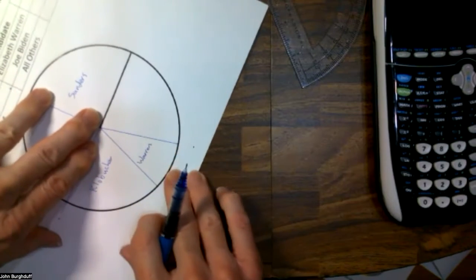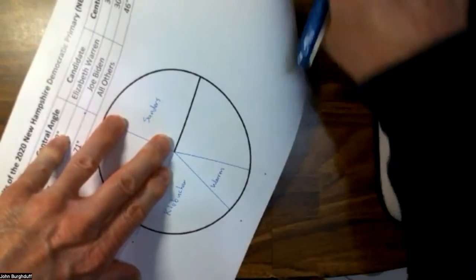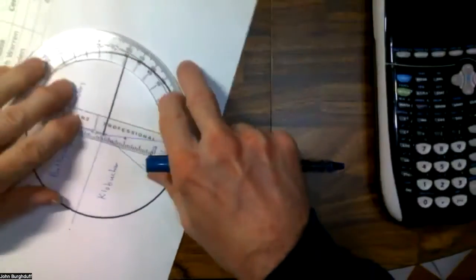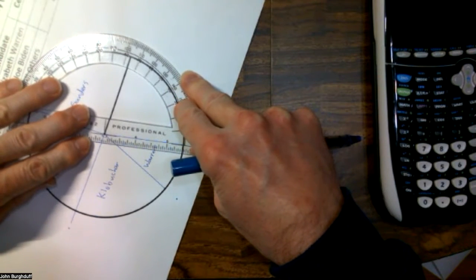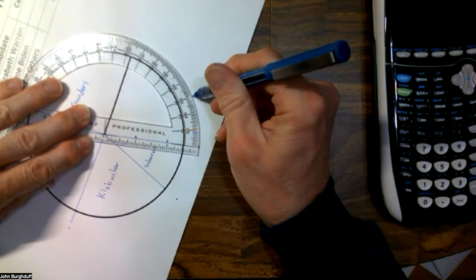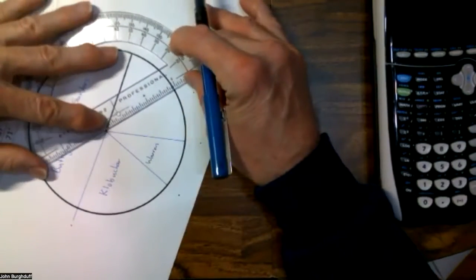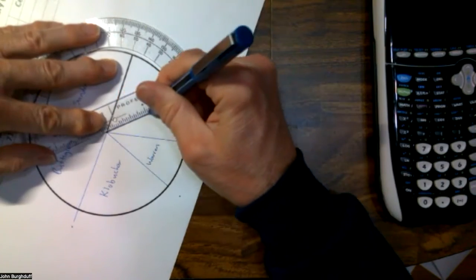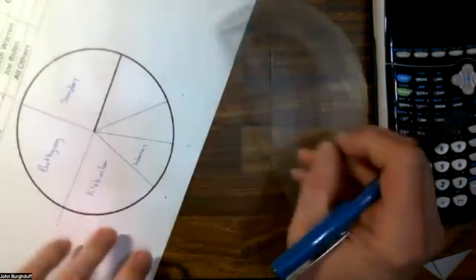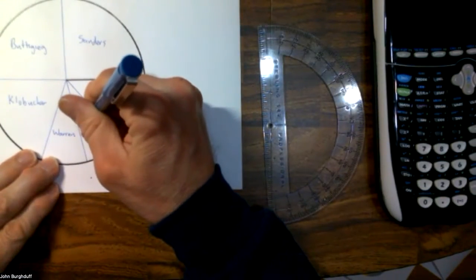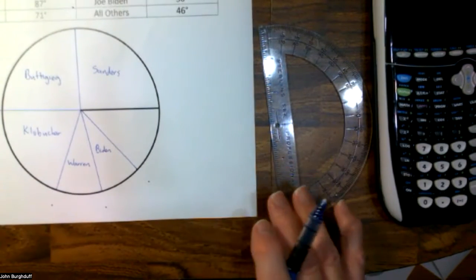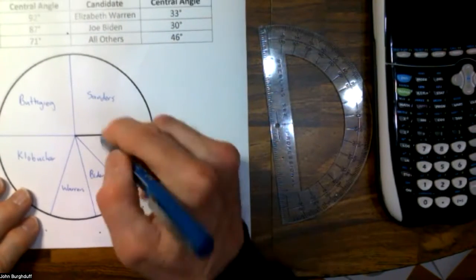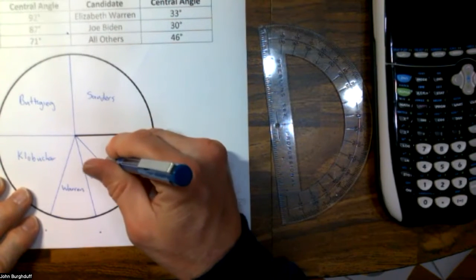The line you just created — turn that so it's horizontal and to the right. The next angle on our list is for Joe Biden, 30 degrees. So we're going to put the center of the protractor right here, line that up, find 30 degrees on our protractor, and draw a line segment joining the center to that point, staying within the circle. That region represents the votes for Joe Biden. The fun thing is when you get down to the last region, you don't have to measure that one — it's going to be everything that's left. This remaining region represents all of the other candidates, and I will label that as 'all the others.'